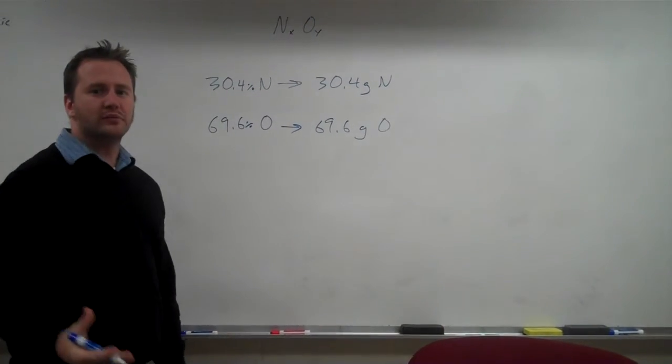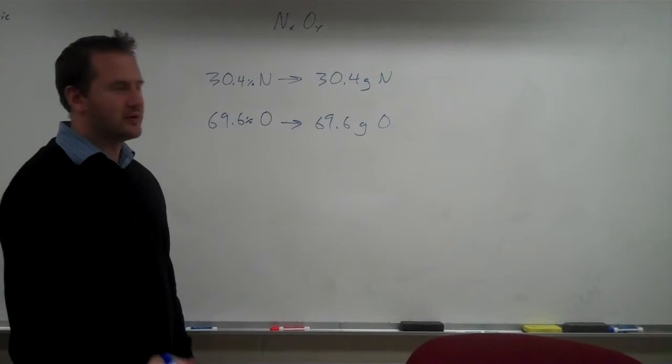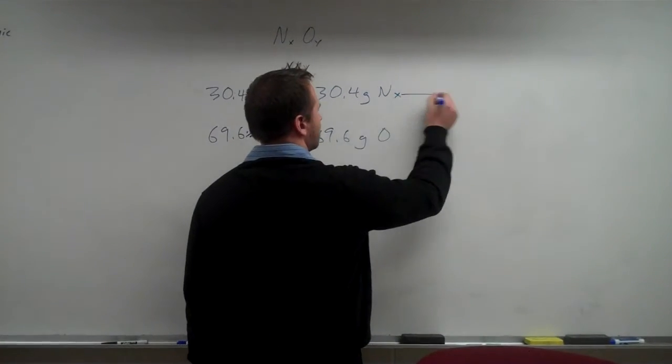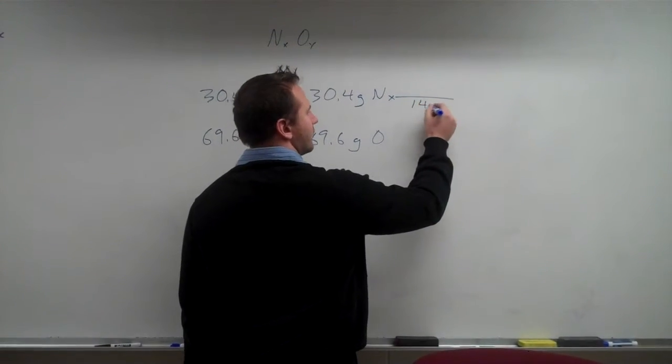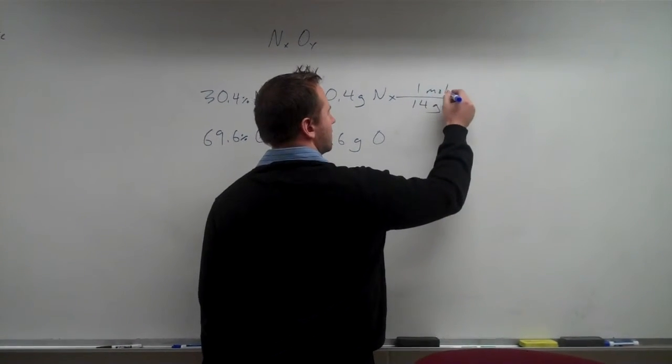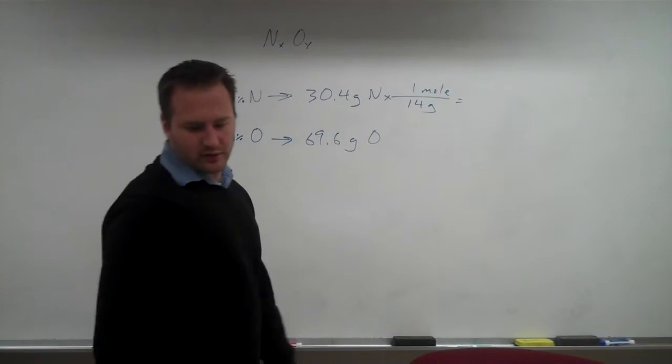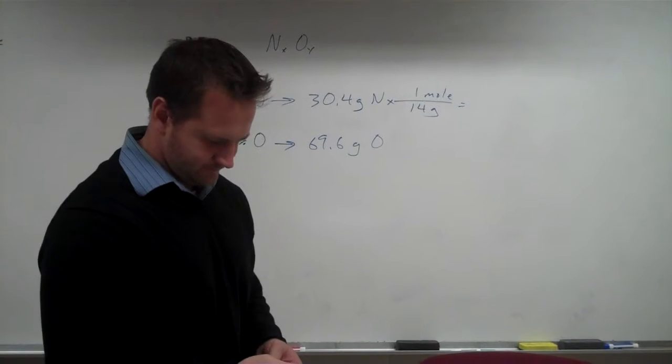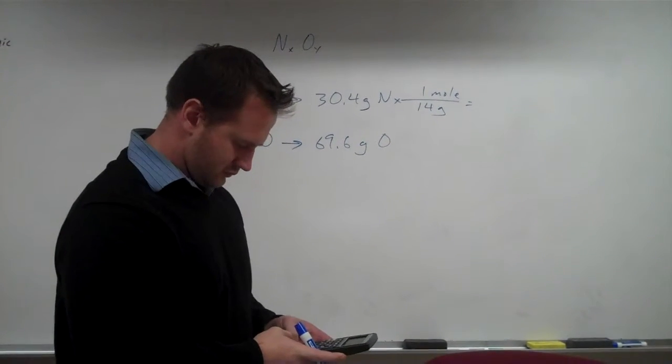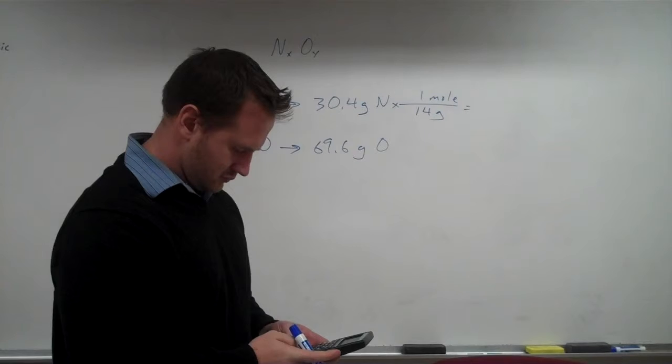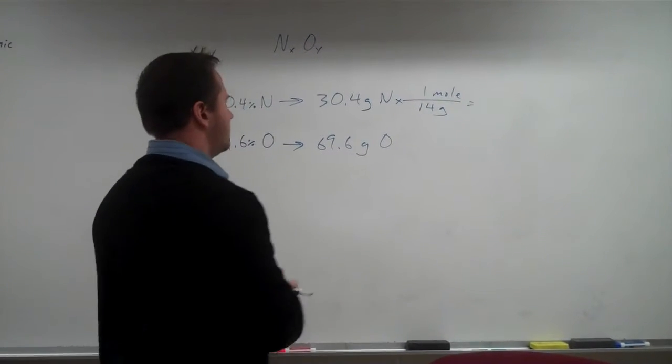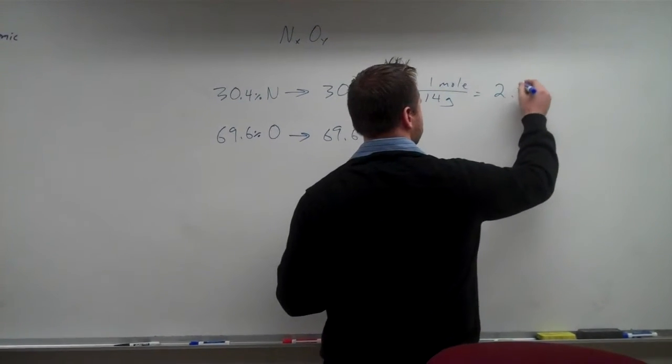Once we're in grams, we can go to the mole of any substance by dividing by its molar mass. For nitrogen, the molar mass is 14 grams per mole, and that will give us 2.17 moles of nitrogen.